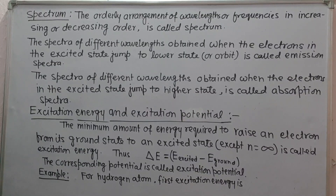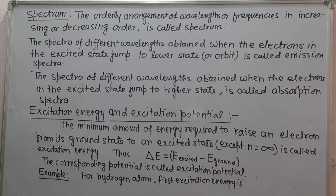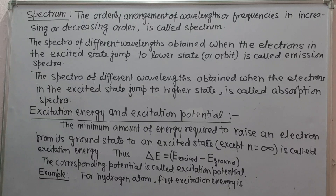Next we take spectrum. The orderly arrangement of wavelengths or frequencies in increasing or decreasing order is called spectrum. The spectra of different wavelengths obtained when electrons in the excited state jump to a lower state is called emission spectra, and when they absorb energy and jump to a higher state, it is called absorption spectra.